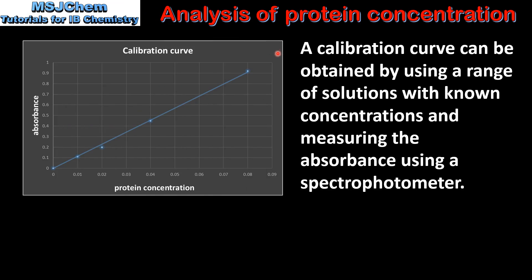A calibration curve can be obtained by using a range of solutions with known concentrations and measuring the absorbance using a spectrophotometer. Here we have a calibration curve with absorbance on the y-axis and protein concentration on the x-axis. As we can see from the graph, the absorbance at a fixed wavelength is directly proportional to the protein concentration.